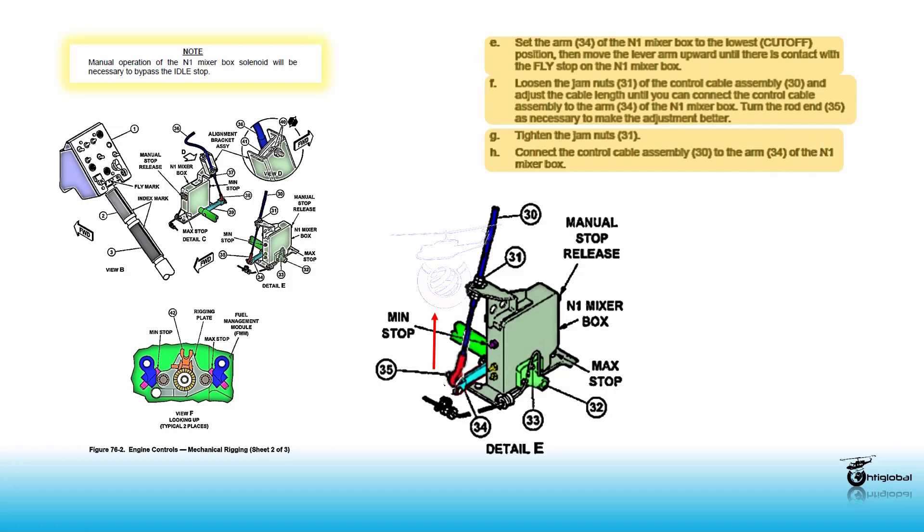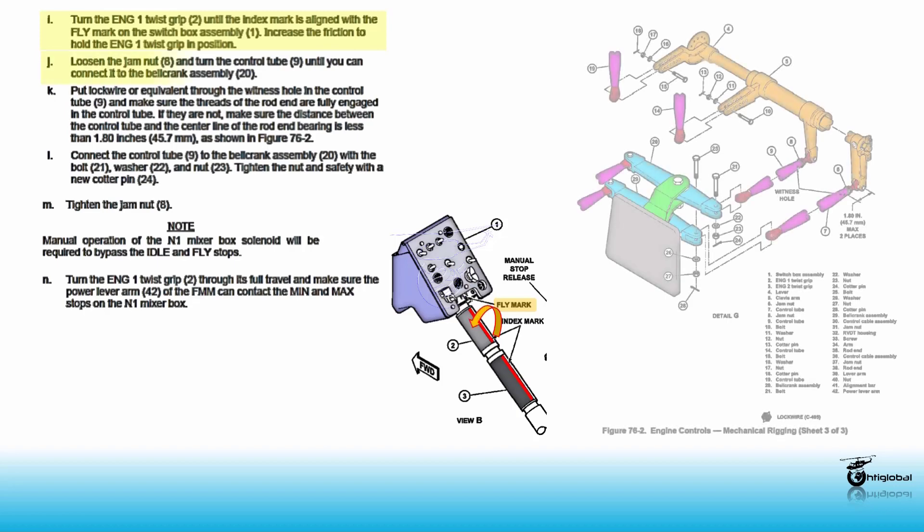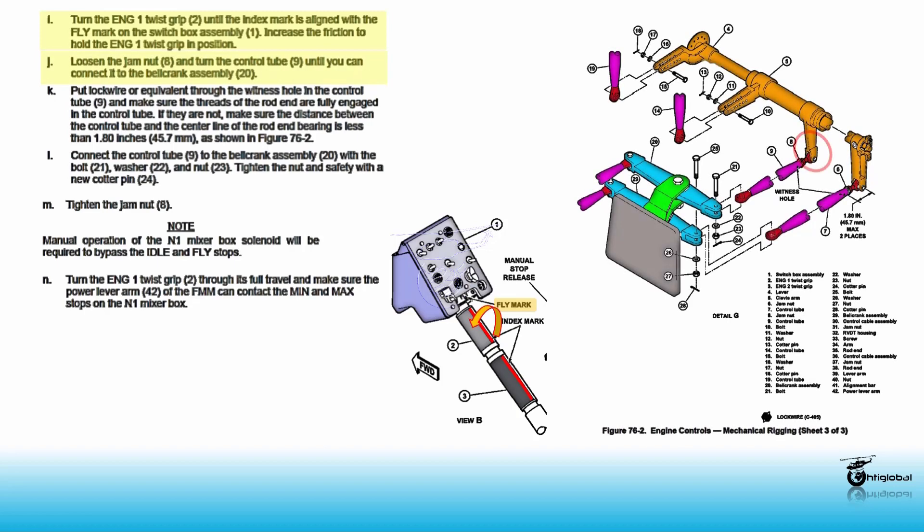Turn the engine 1 twist grip 2 until the index mark is aligned with the FLY mark on the switch box assembly 1. Increase the friction to hold the engine 1 twist grip in position. Loosen the jam nut 8 and turn the control tube 9 until you can connect the bell crank assembly 20.